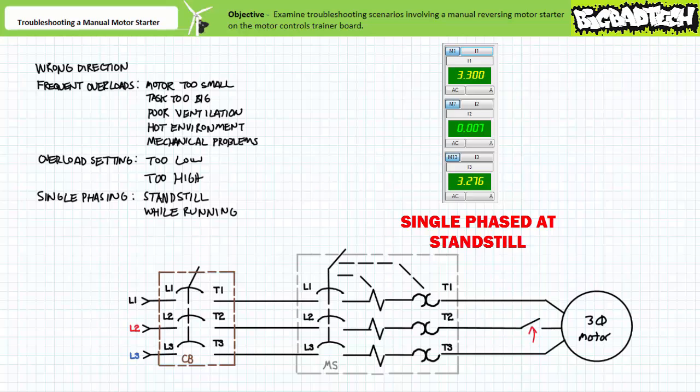Here's an amp clamp being used to measure line current of a three phase AC motor that's been single phased while at a standstill. Note current in L1 and L2 are way too high and L2 is carrying no current. Again, phase L2 is obviously the source of our problem.